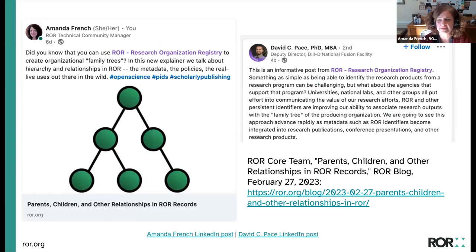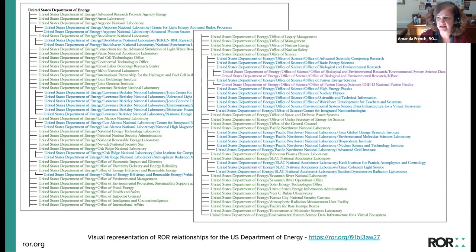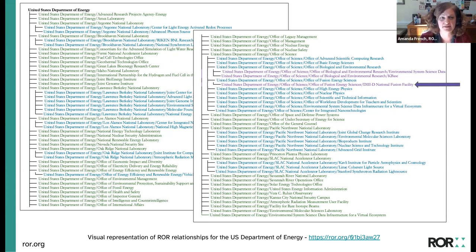A common question is how ROR manages organizational hierarchy. We wrote an explainer on the ROR blog. The deputy director of a national-level research facility noted that ROR and other PIDs improve our ability to associate research outputs with the family tree of the producing organization. As an example, the DIII-D National Fusion Facility sits within a particular DOE family tree — records we've been working on with DOE to ensure accuracy and granularity, so research outputs can be associated with all child organizations of the DOE.